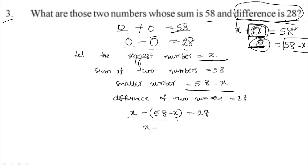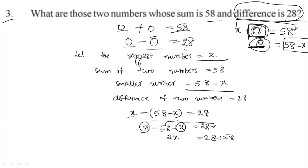Expanding: x minus 58 plus x equals 28, so 2x minus 58 equals 28, giving 2x equals 86.